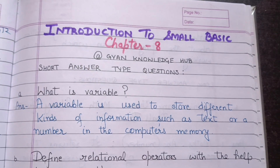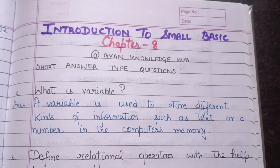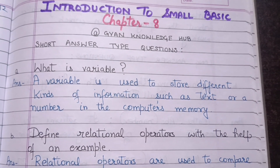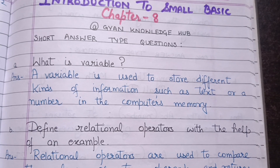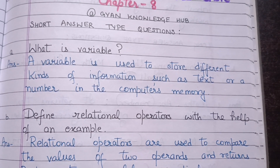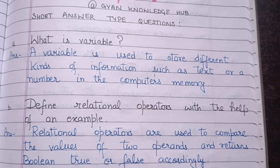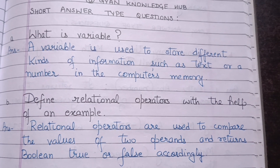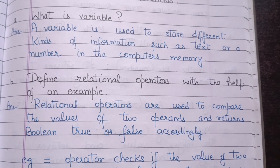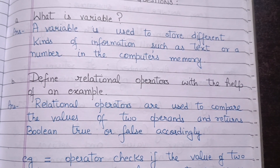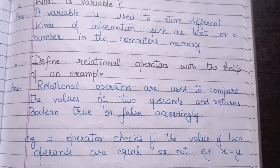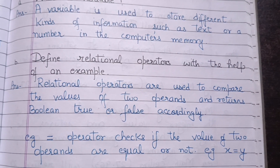Next: Define relational operators with the help of an example. Relational operators are used to compare the values of two operands and return a boolean True or False accordingly. For example, the equal-to operator checks if the values of two operands are equal or not. For example: x = y.